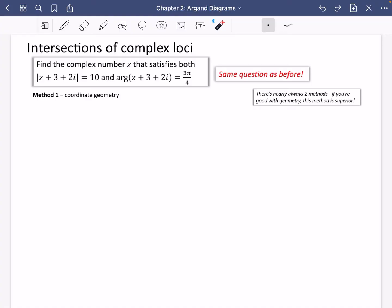So far we've just been doing one kind of loci drawing at a time. This is the first time we're going to have two of them at the same time, and we're going to try and find the solution to where these two complex loci are going to cross each other.